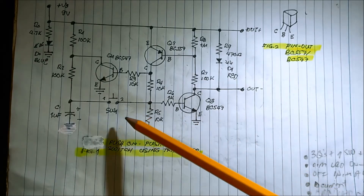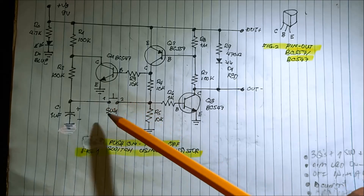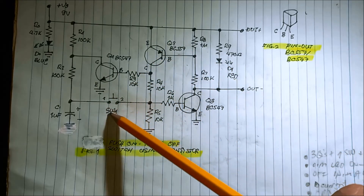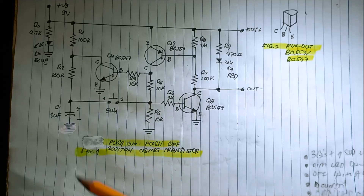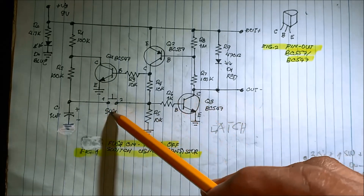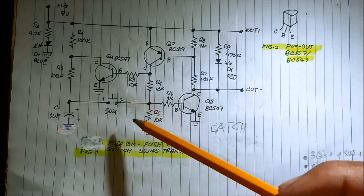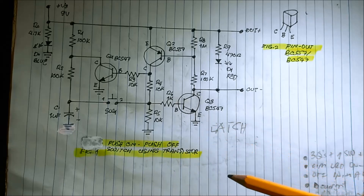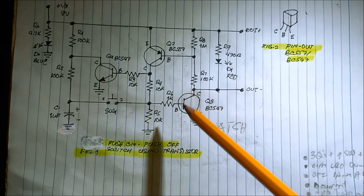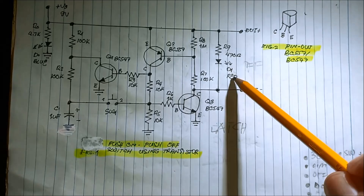The switch is normally open — it's a push button. Because of the circuit, this normally open push button switch is converted into a push on push off switch, sometimes called a latch switch or bistable multivibrator, because it latches: one press turns it on, one press turns it off.